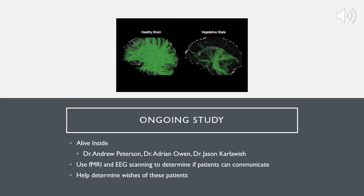One ongoing study that examines persistent vegetative states is called Alive Inside and is using functional MRI and EEG scanning to determine if patients in this state are able to communicate. Patients are presented with questions and asked to imagine one scenario if the answer is yes and another if the answer is no. By using these situational scenarios that cause activation in different areas of the brain, researchers look to determine what the answer may be, hoping to use this information to help determine the wishes of patients and whether care should be provided or withdrawn.